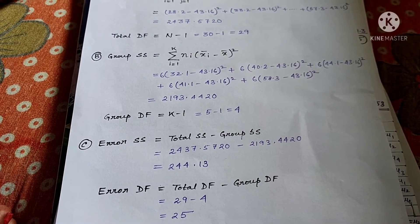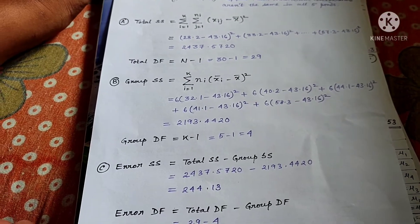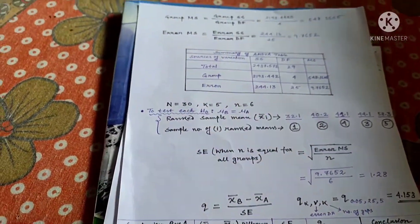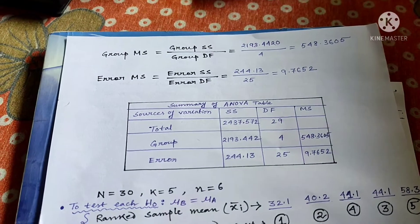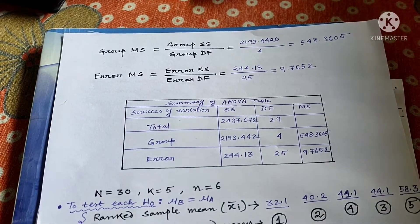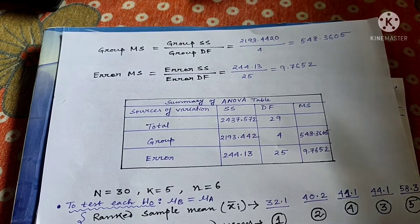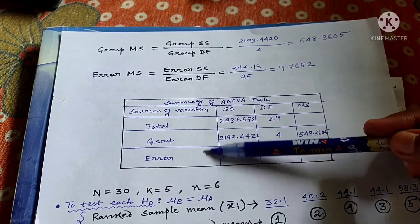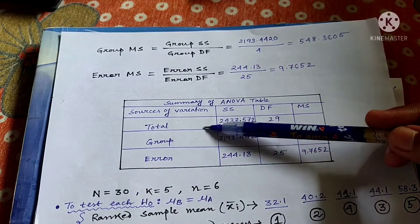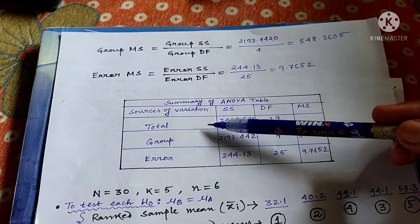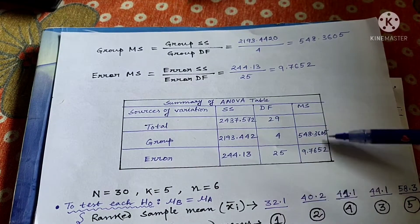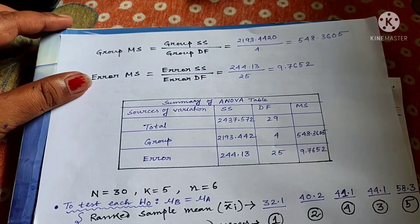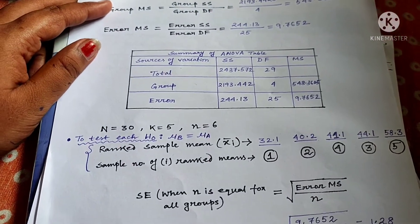To test which hypothesis applies, you need to find total SS and total df, then group SS and group df, and finally error SS and error df — as covered in my previous video. Then formulate an ANOVA summary table recording the SS, df, and MS values for total, group, and error variations, so your further calculations will be easier.